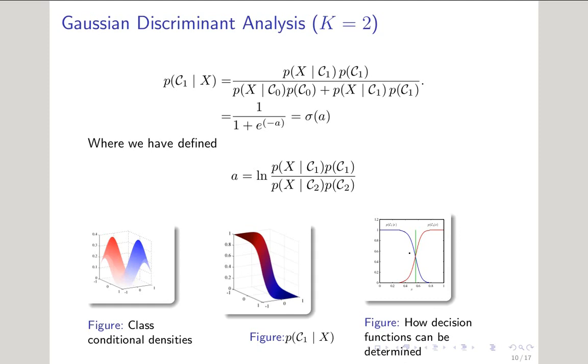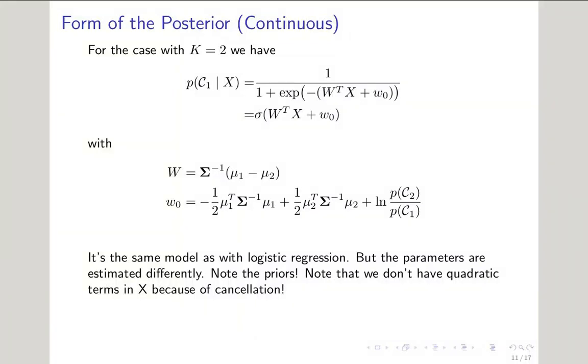Now you might be wondering why we went to the bother of formulating the posterior into the form of a sigmoid function. Well, what if we formulate the a function from the previous page in the following way? Here we expand the conditional probabilities into their Gaussian representations, but we keep the priors for each class in the same form as before. This allows us to write the a function as a linear function of w times x plus our bias zero, or w sub-zero, or b. Hmm. Where have we seen that before?